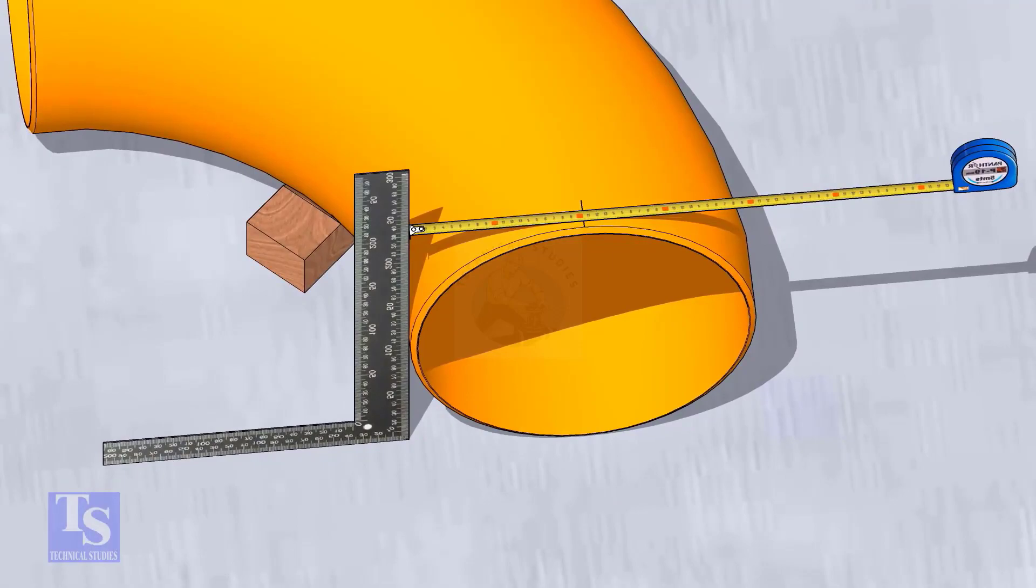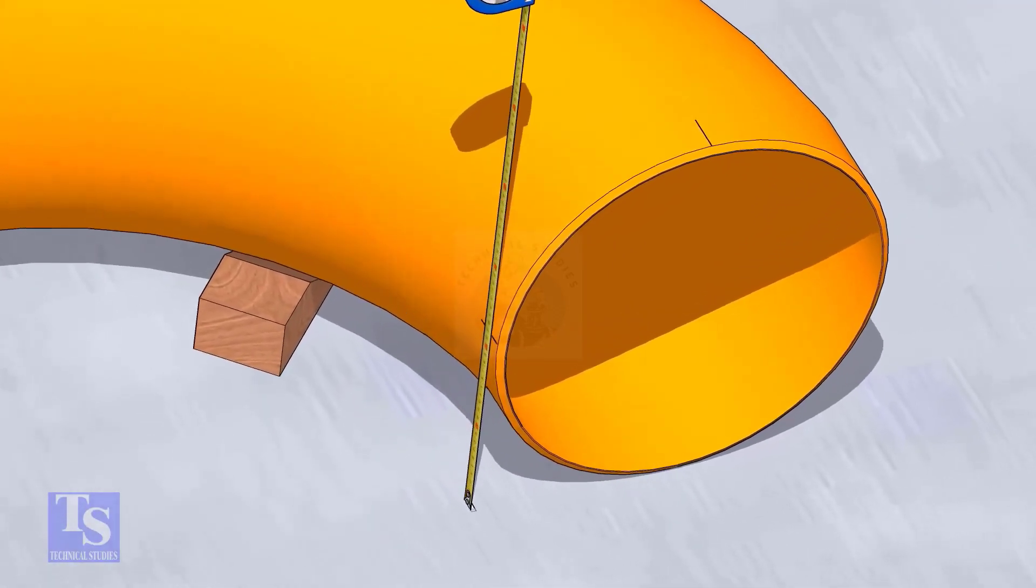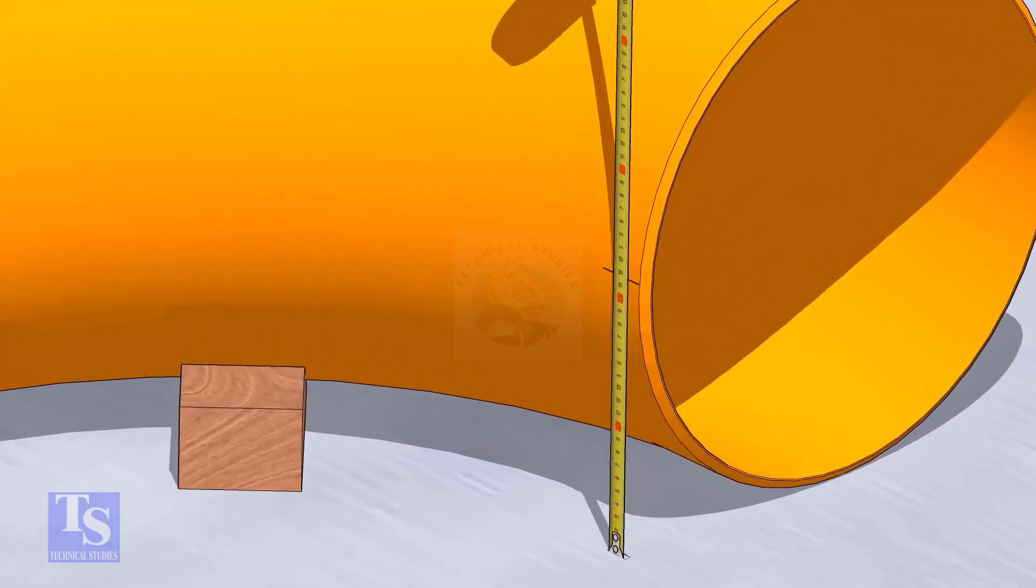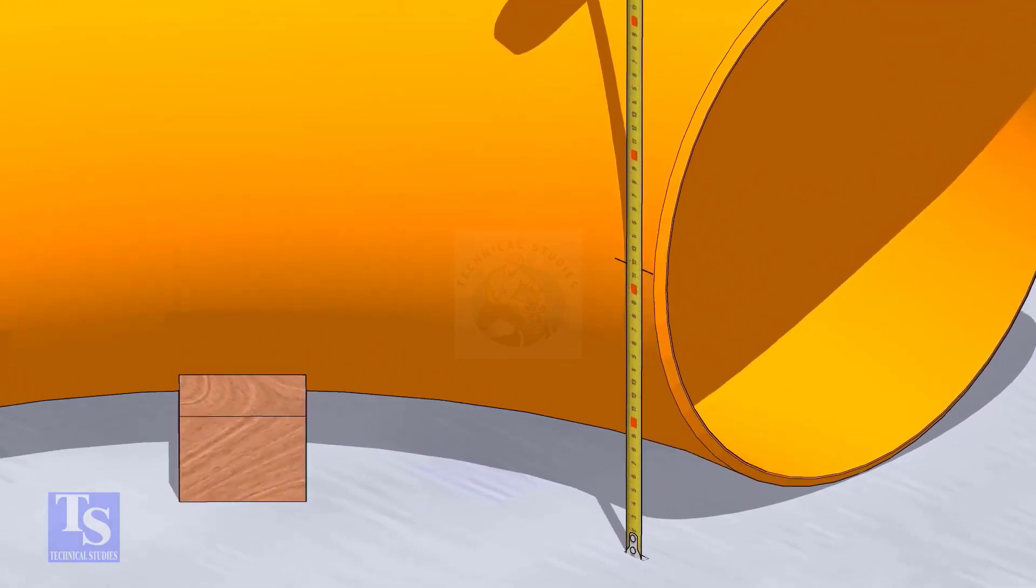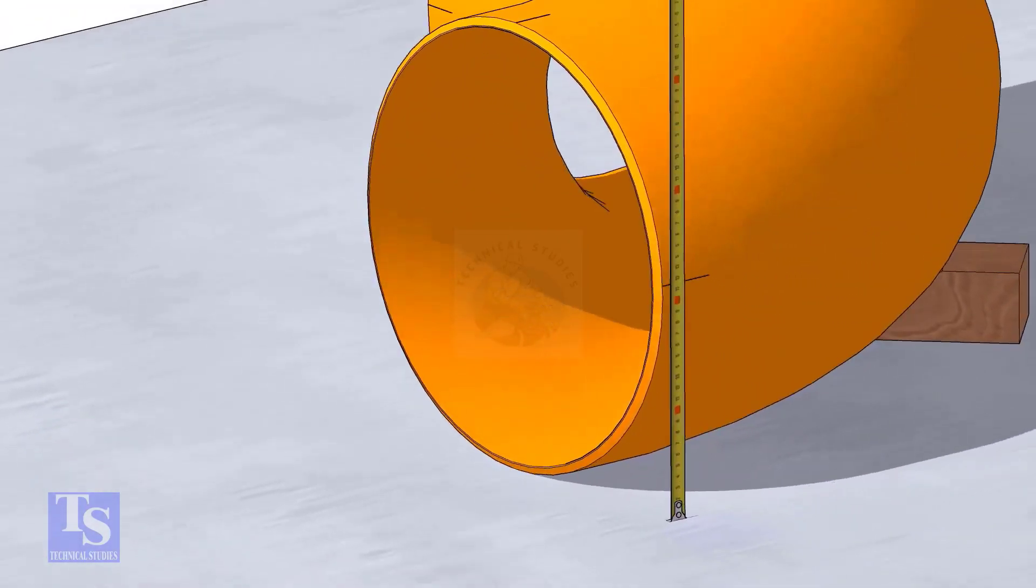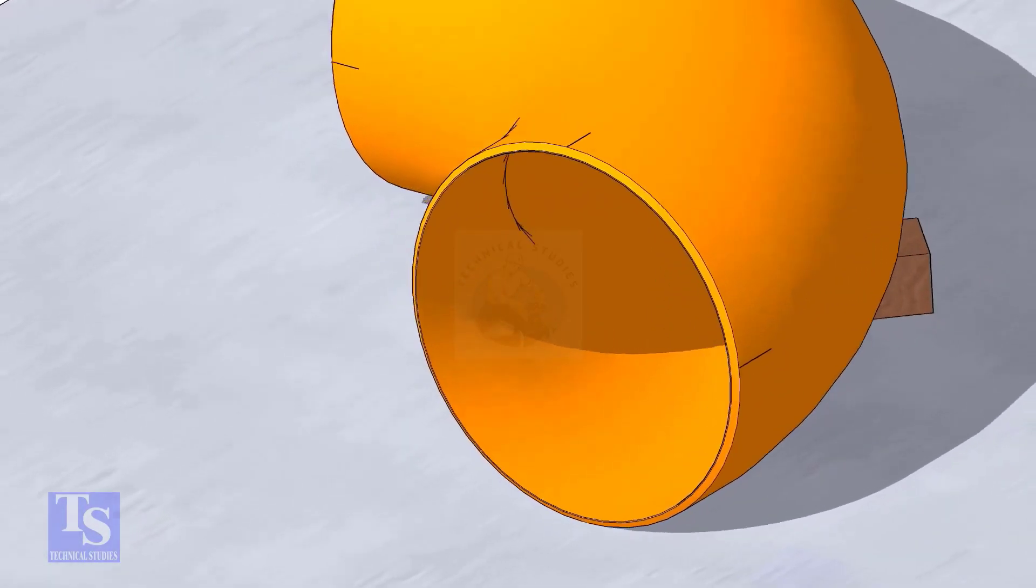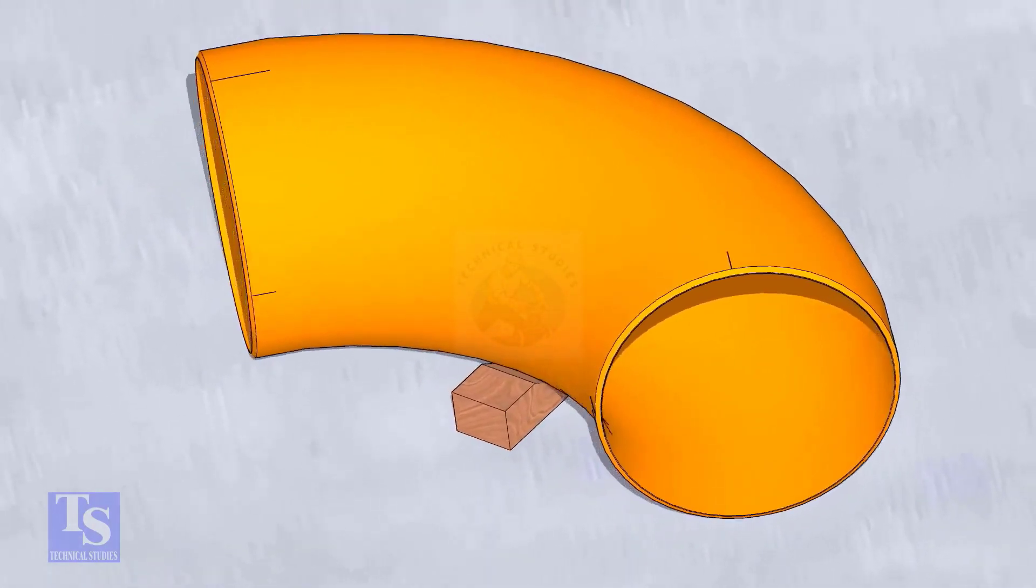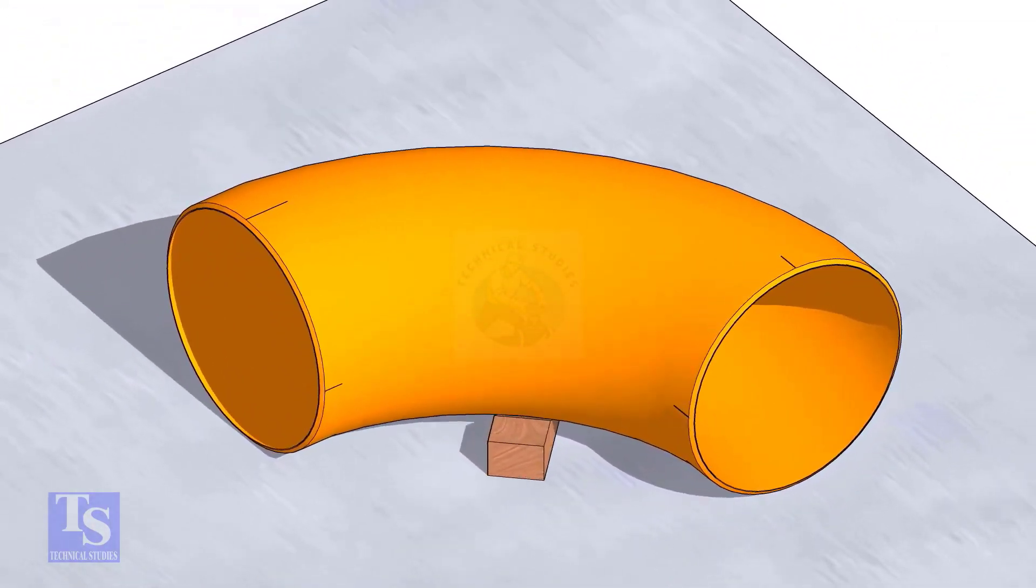Mark half diameter from the plate to the elbow on both sides as shown. Repeat the process and mark the quarters on the other end of the elbow. Rotate the elbow and mark the bottom side quarter also.